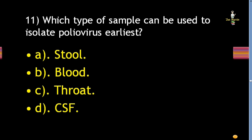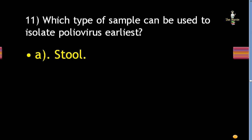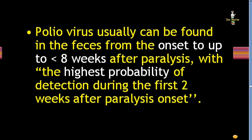Next question: which type of sample can be used to isolate poliovirus earliest? Options: stool, blood, throat, or CSF. Correct answer is stool. Poliovirus can usually be found in the feces from the onset to less than 8 weeks after paralysis, with the highest probability of detection during the first 2 weeks after paralysis onset.